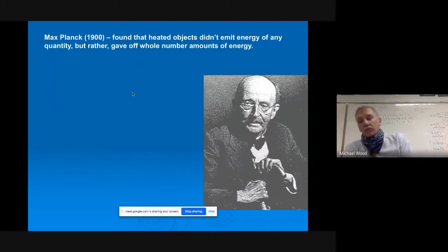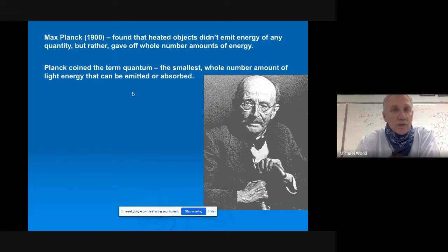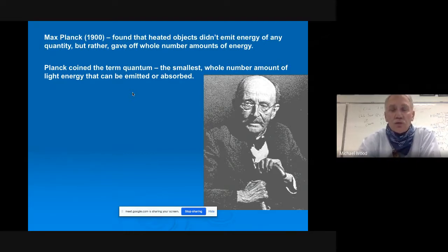What we're going to be learning about is called the quantum mechanical model. This slide is about the idea of a quantum — this goes back over a hundred years ago. A chemist named Max Planck found that heated objects didn't emit energy of any quantity, but rather gave up whole number amounts. Planck coined the term quantum: the smallest whole number amount of light energy that can be emitted or absorbed.